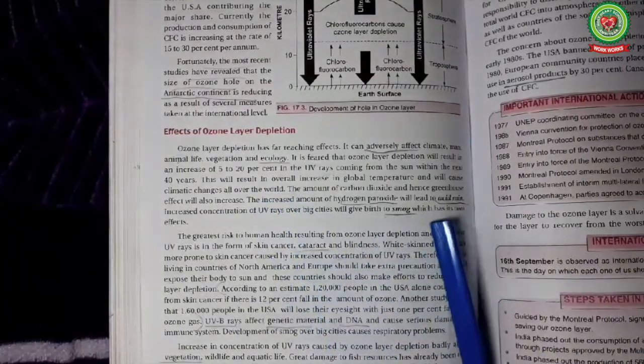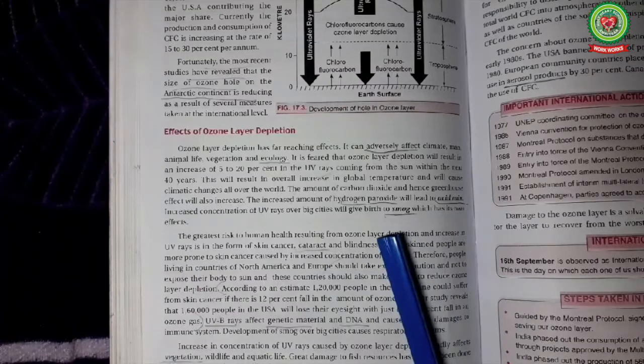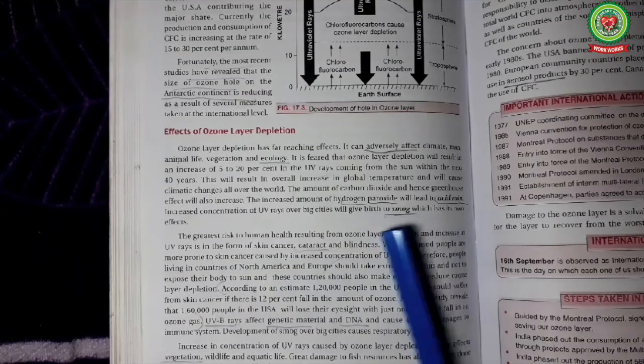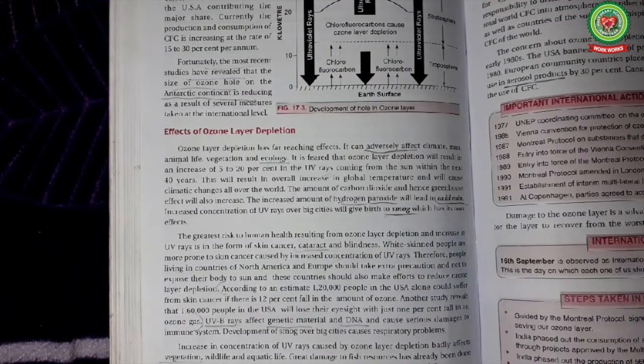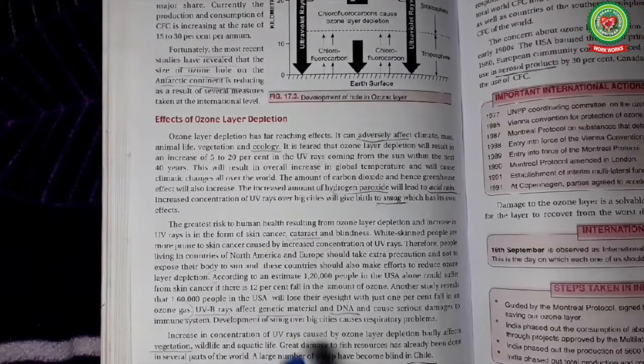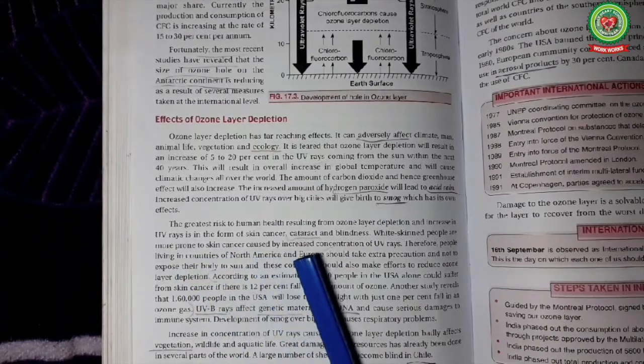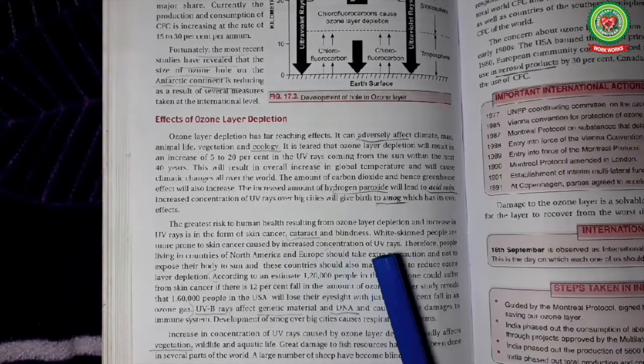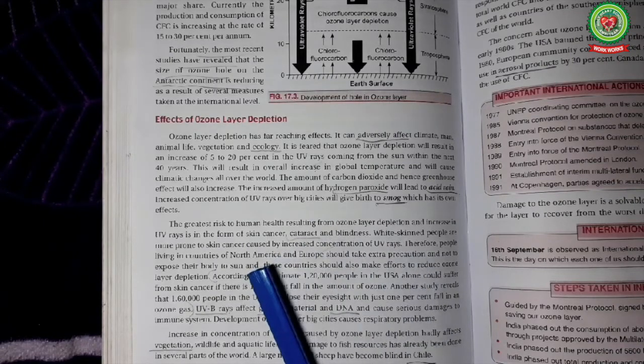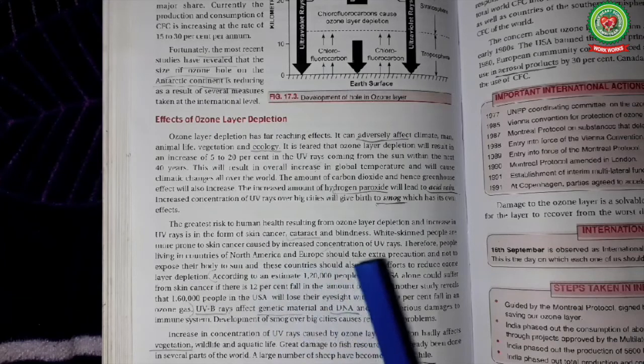Ozone depletion can lead to acid rain and smog formation mostly in the big cities. UV rays can cause skin cancer, cataract, blindness. White skin people are more prone to skin cancer caused due to UV rays.